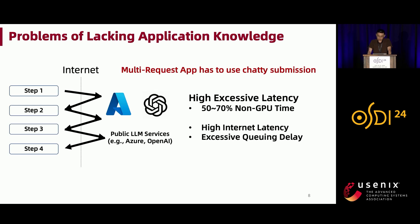The absence of application knowledge leads to efficiency drawbacks. For applications with multiple sequential requests — for example, four steps — because existing LLM services only serve individual requests, the application client has to do chatty request submission, suffering from high excessive latency. From our measurement of a production copilot, 50% to 17% of the end-to-end latency is spent outside the real GPU interface. Multiple requests have to communicate over the internet, suffering internet latency, and resubmission of each request incurs extra queuing delay.